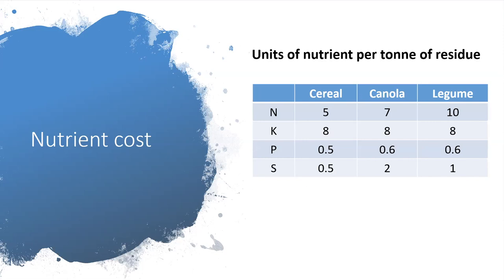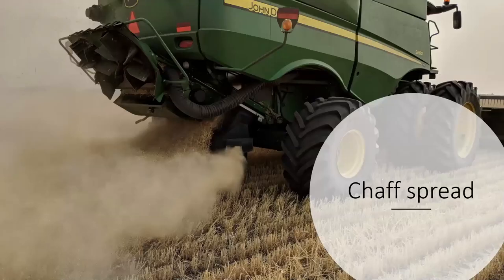Nutrient costs are important when considering all of those tools that can remove nutrients from the paddock - windrow burning being the biggest, as is Bale Direct. We need to consider how many nutrients are contained within the chaff or straw, put a value on that, and work out how many dollars worth of nutrients we are removing. These figures are from a study I did pushing 10 years ago - I sampled chaff heaps and windrows from around the wheatbelt and had them analysed by CSBP for the amounts of various nutrients per tonne of residue.